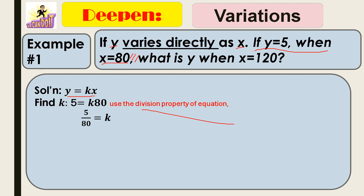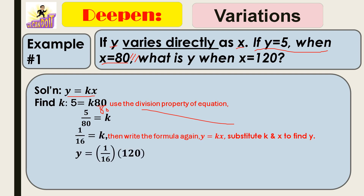Using the division property, you divide both sides by 80. Therefore, k equals 5 over 80. You need to simplify that, so k equals 1 over 16. Then, it says what is y when x is 120? After you get k, substitute k and x equals 120. Multiply: 1 over 16 times 120 over 1. 1 times 120 is 120, and 16 times 1 is 16. Simplify: y equals 15 over 2.